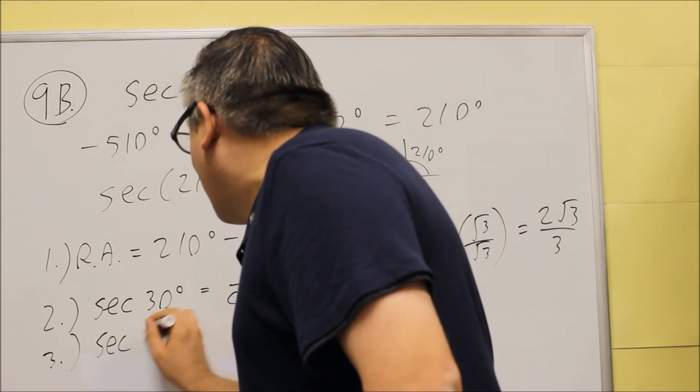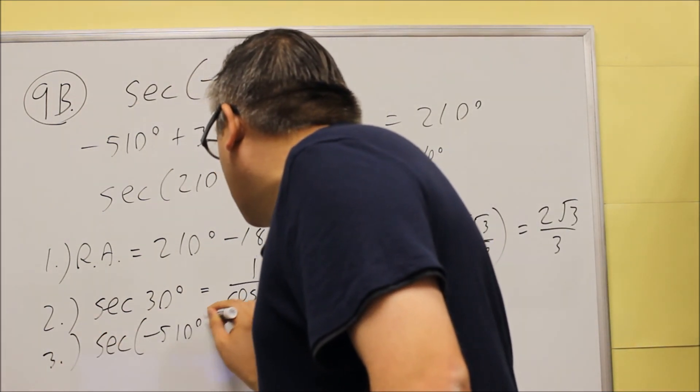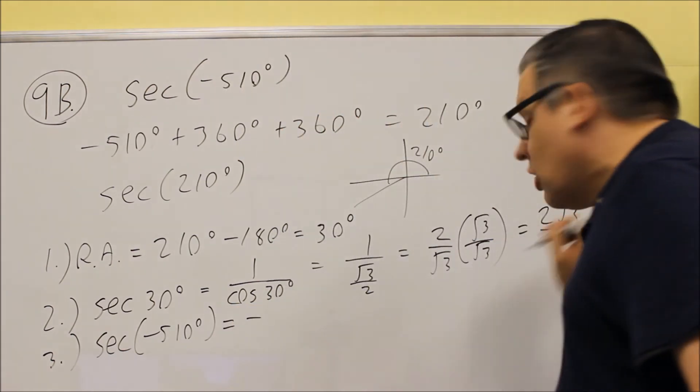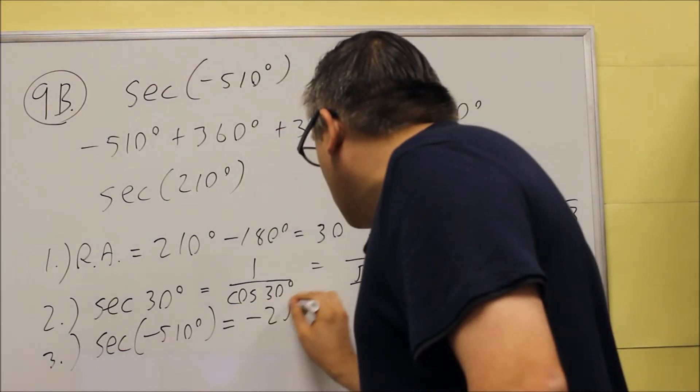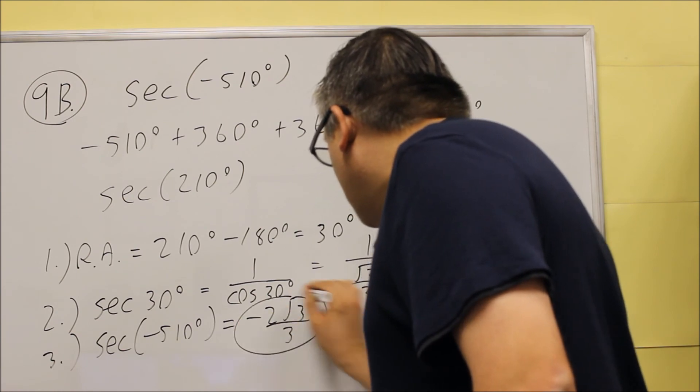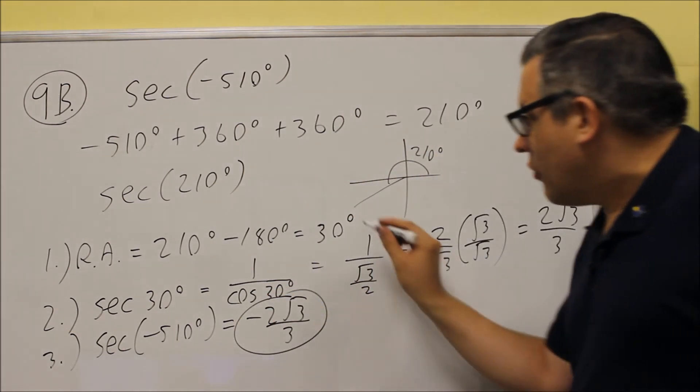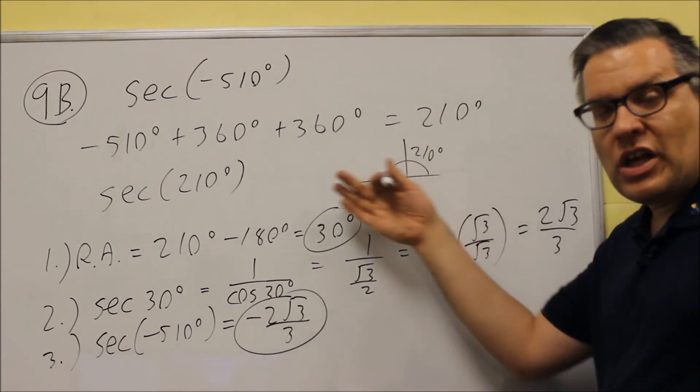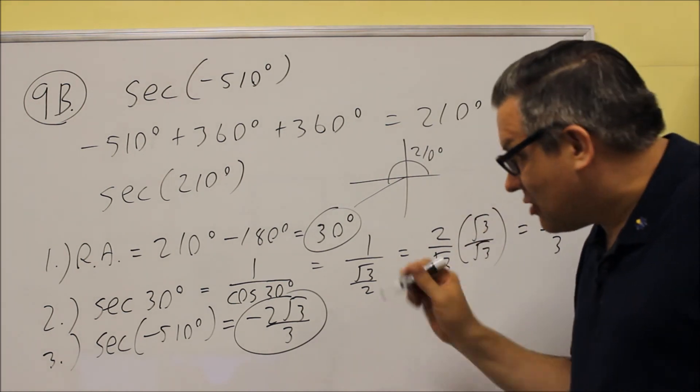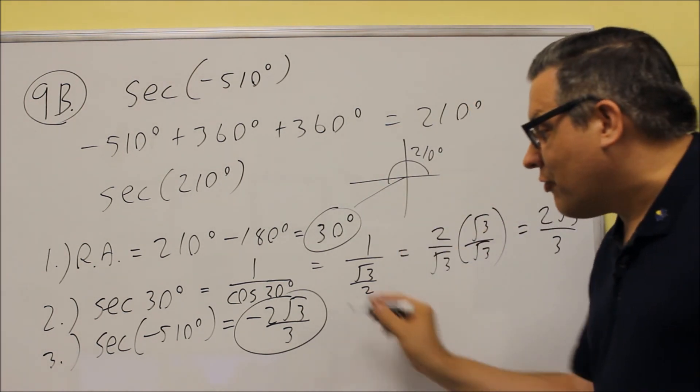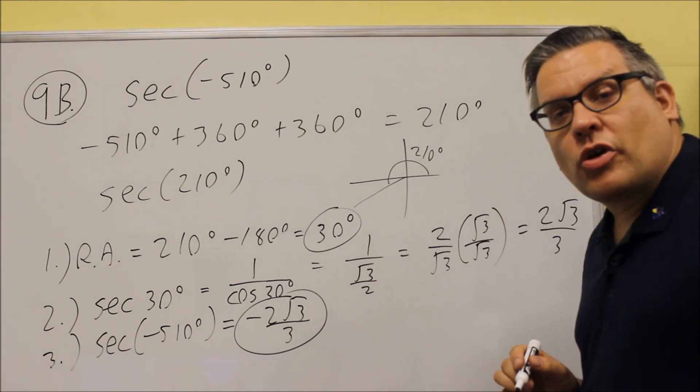So I have negative 2 square root of 3 over 3. And that is going to be our second answer. Our first answer that we have, that will be the second blank on the test. We'll fill that in with 30 degrees. The first blank would be negative 2 square root of 3 over 3.